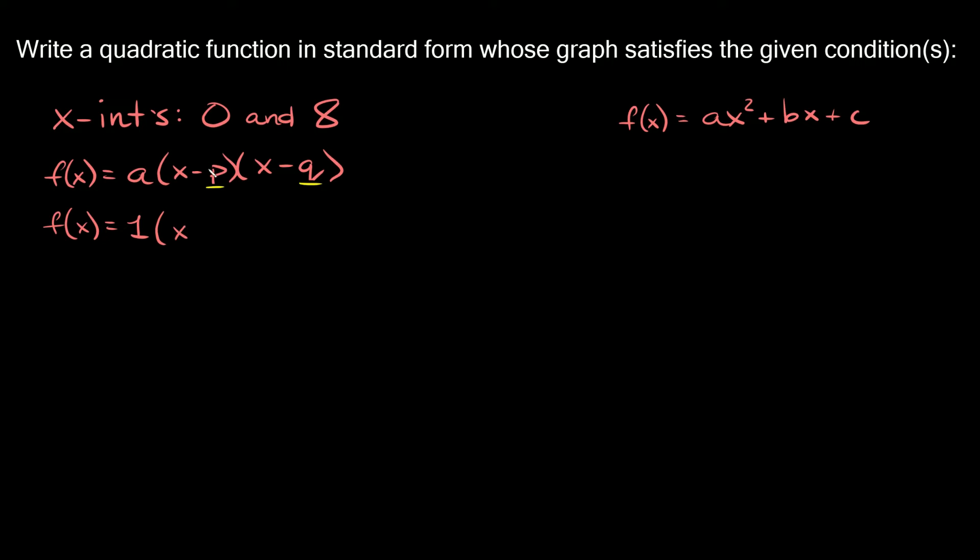So again these are our x intercepts right, 0 and 8. So we're going to have x here, 0 is not positive or negative so you can write minus or plus 0. I'll just put minus 0, and then we have a positive 8 right, so we're going to have x minus 8.